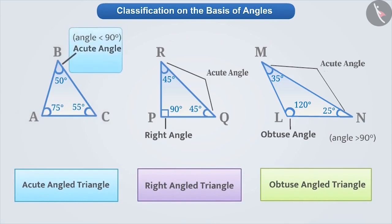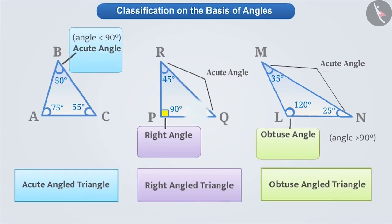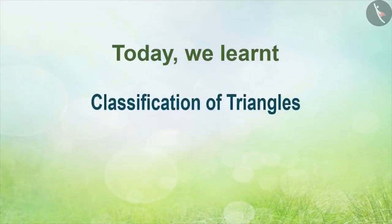Triangles in which all angles are acute angles are called acute angle triangles. Triangles with one right angle are called right angle triangles. Remember that the right angle of a right angle triangle is represented with a small square symbol. Therefore, if an angle in a triangle is marked like this, you can easily identify it as a right angle triangle. Similarly, triangles in which one angle is an obtuse angle are known as obtuse angle triangles. Today we have learned the classification of triangles. In the next video, we will learn some examples related to this.